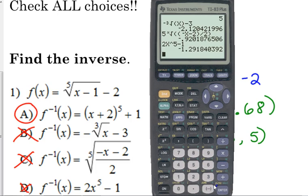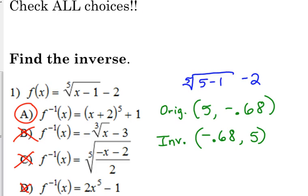So A was the only one that I got 5 back out for. Now, hopefully you know enough about inverses to look at these answer choices and say, if my original was a fifth root, it makes sense that my inverse is going to include a fifth power. So hopefully you could at least narrow it down to A and D before you even try this method that I was showing you.